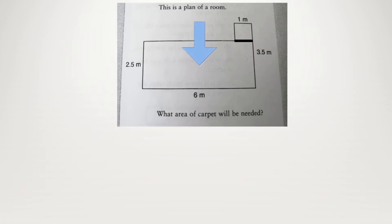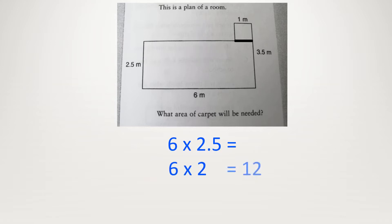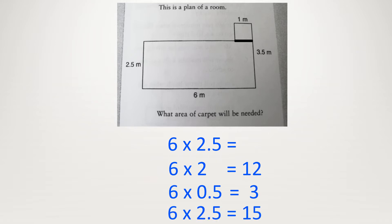This is a plan of a room. What area of carpet will be needed? With a weird shape like this it's good to cut it up into two rectangles. So let's draw a line here. To work out the area of the big one we do length times width: 2.5 times 6. A nice way to do this is 6 times 2 equals 12, then 6 times a half, which is the same as saying half of 6, equals 3. Then we add it up: 12 plus 3 equals 15.